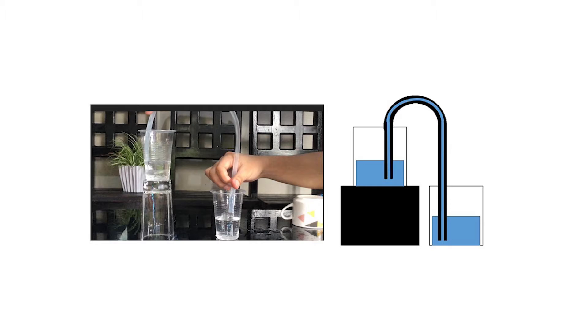The model siphon that we've made follows the principles of hydrostatics—the relationship between the height of the fluid column and its pressure. The highest point in the tube actually has lower pressure than atmospheric pressure.